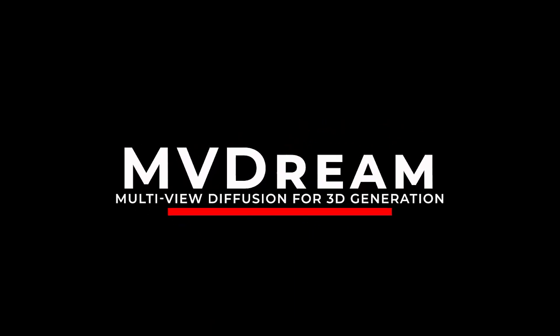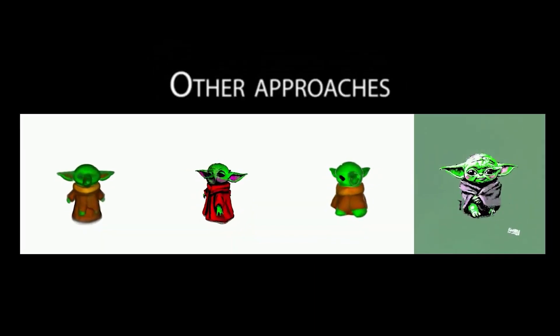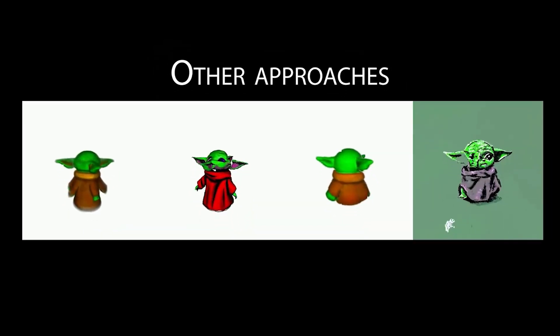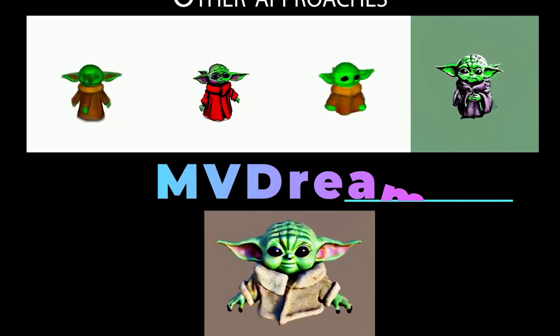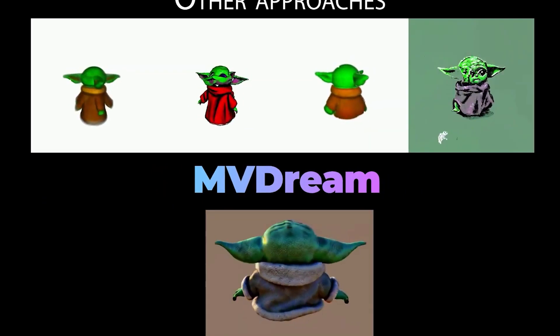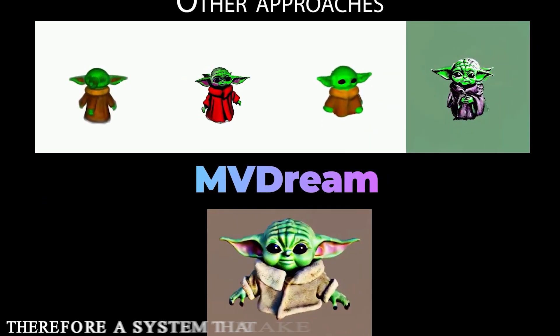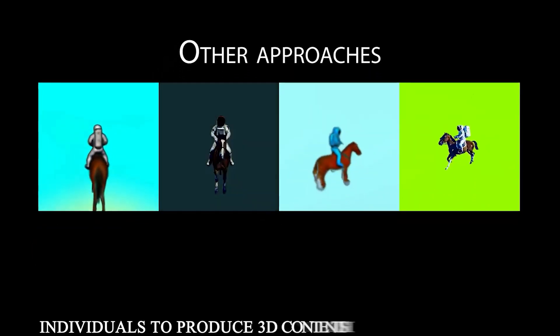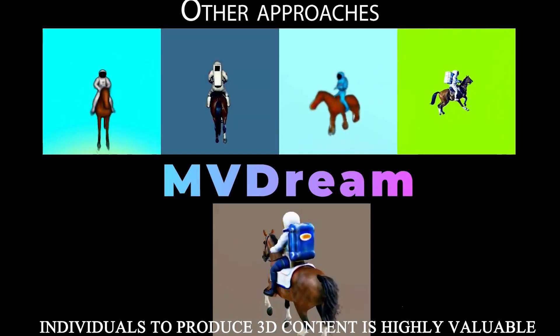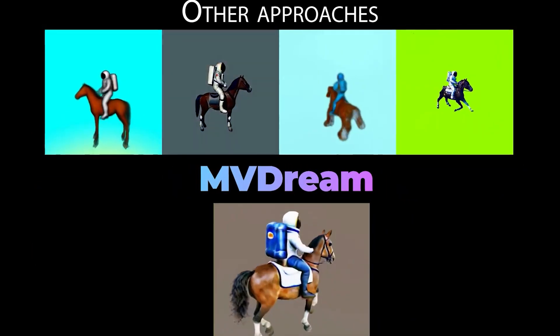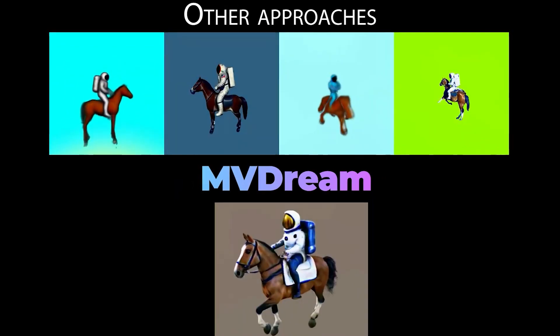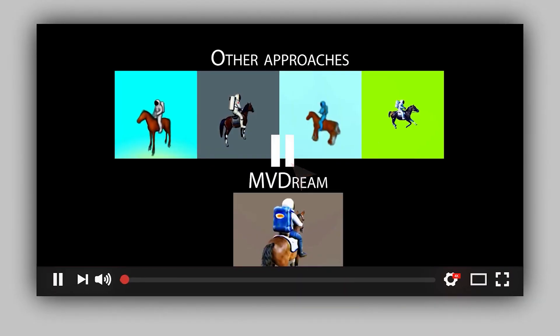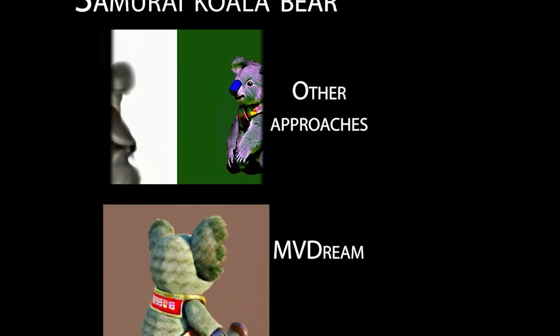Despite being a critical step in the pipeline for modern games and media, producing 3D content takes a long time. Talented designers may spend hours or even days on a single 3D object. Therefore, a system that makes it simple for non-technical individuals to produce 3D content is highly valuable. Existing template-based generation pipelines, 3D generative models, and 2D lifting techniques are the three kinds of 3D object production methods.